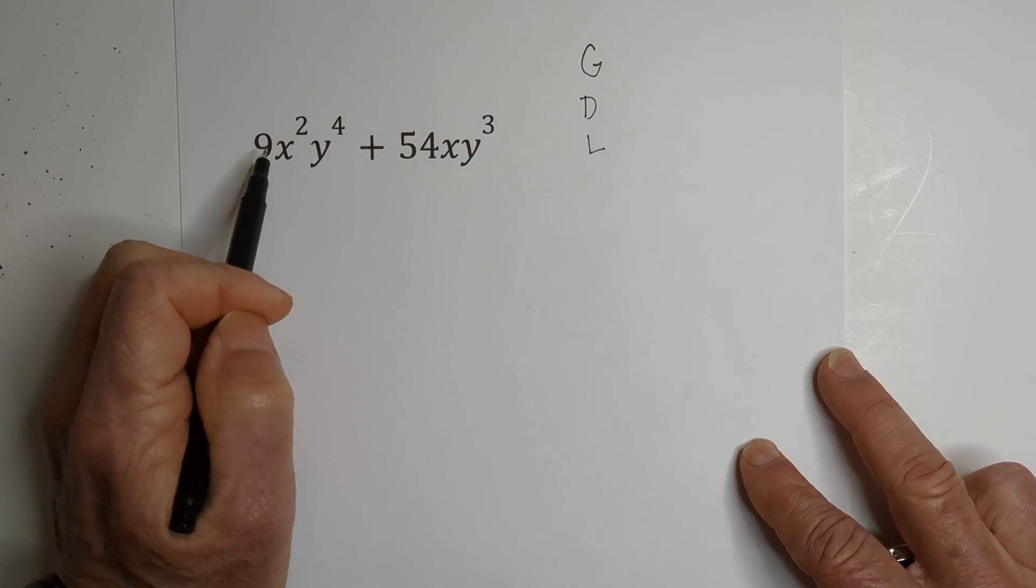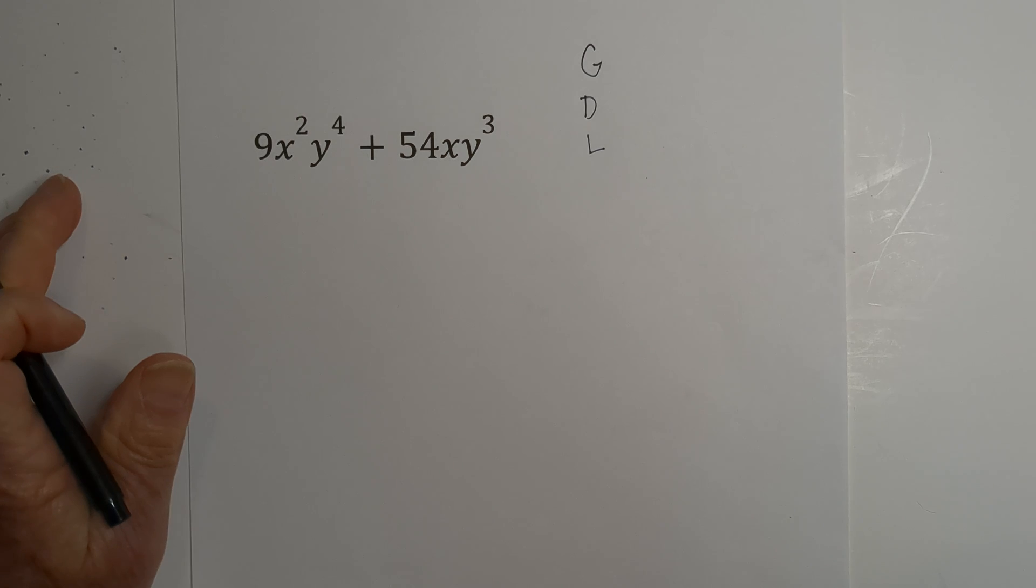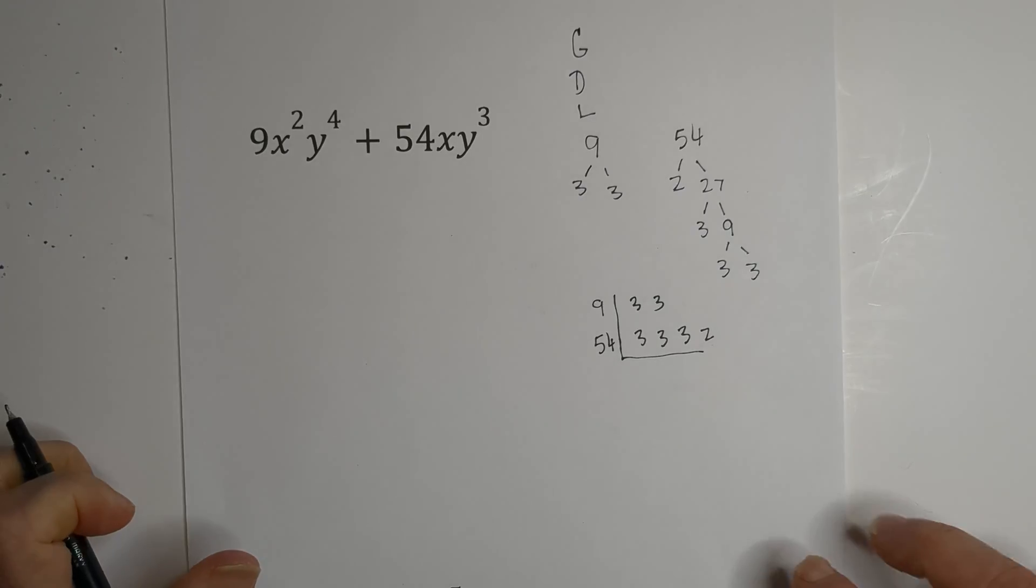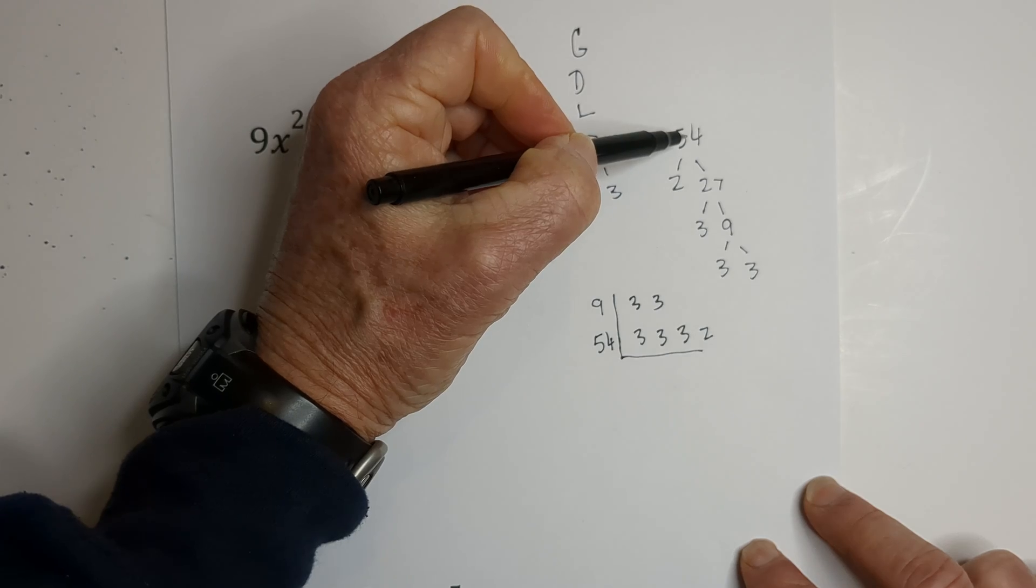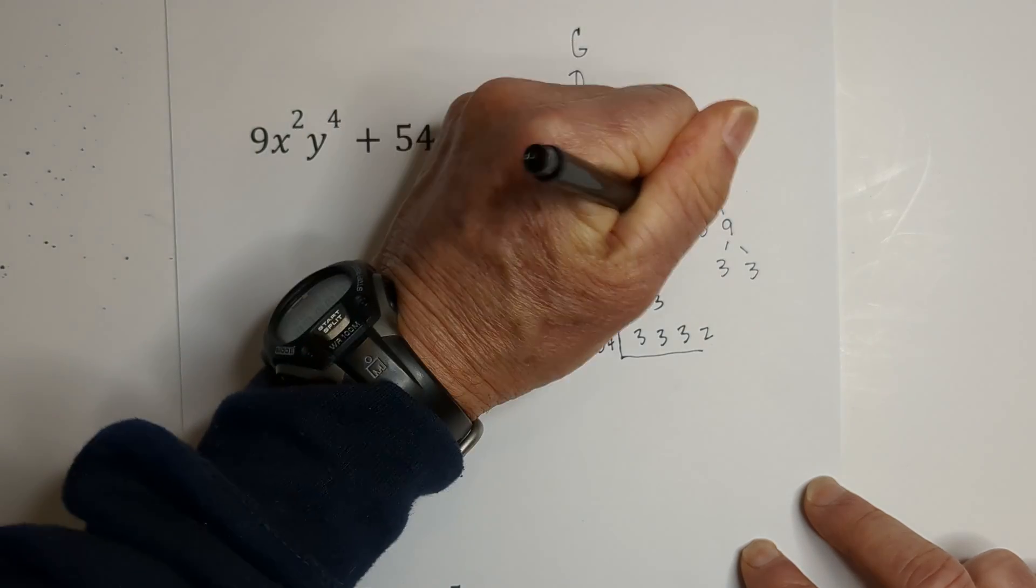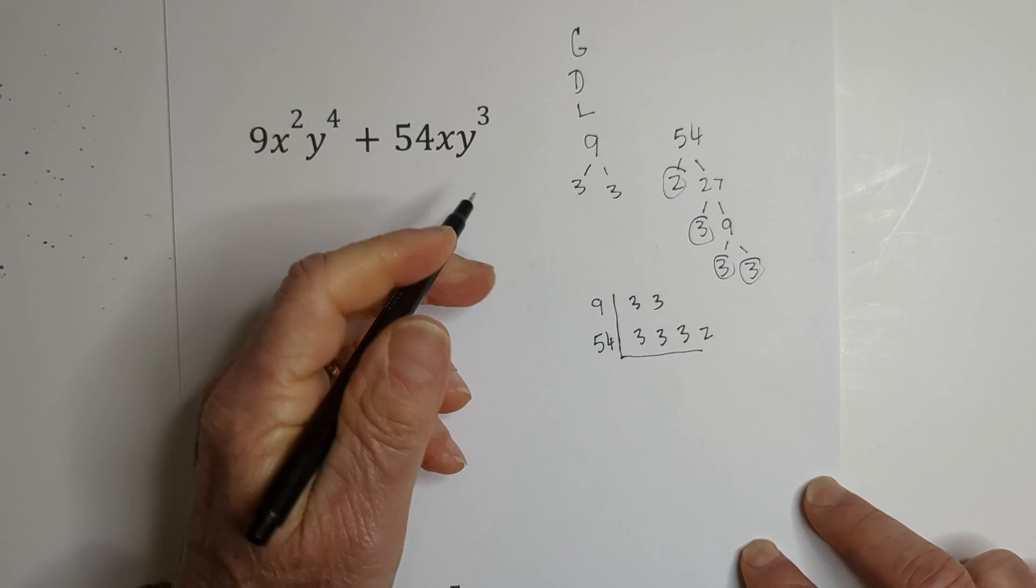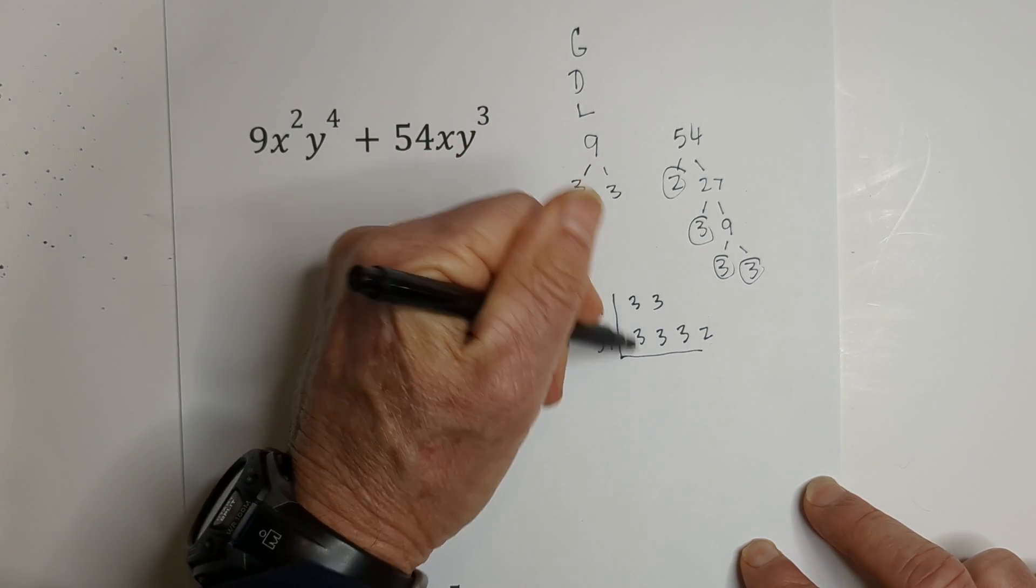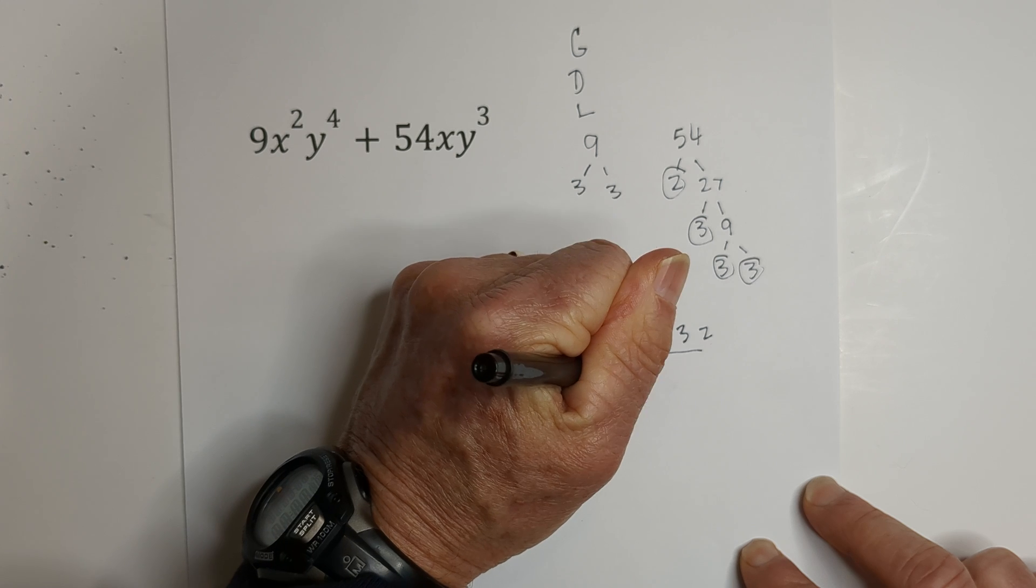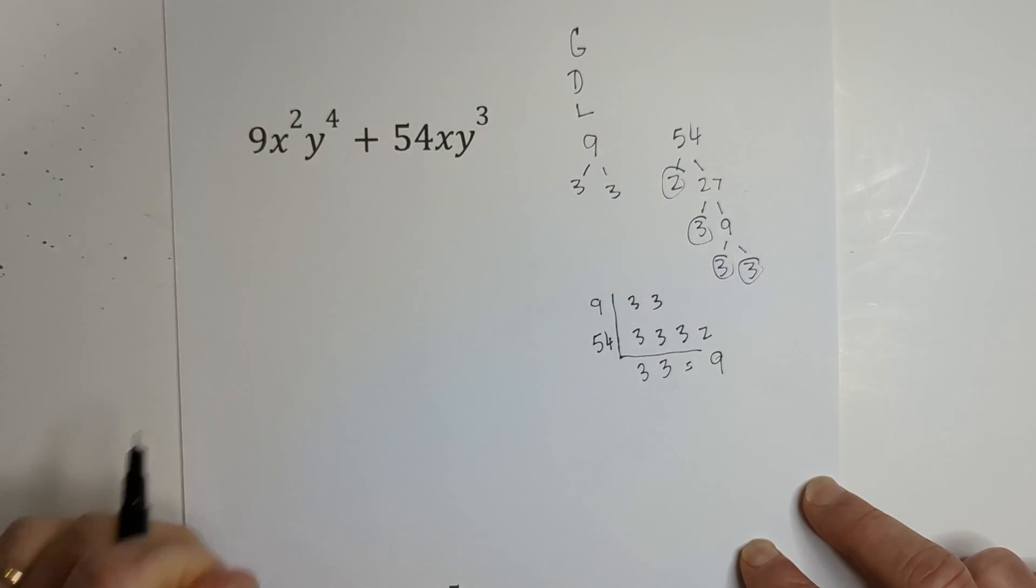Many of you can probably see that the greatest common factor is nine, but I'm going to create a factor tree to show how I found that. Here's the factor tree of nine and 54 with their prime numbers circled. I've written them in this box. Remember, you have to have two in a column to bring the number down. We have three and three, so that equals nine.